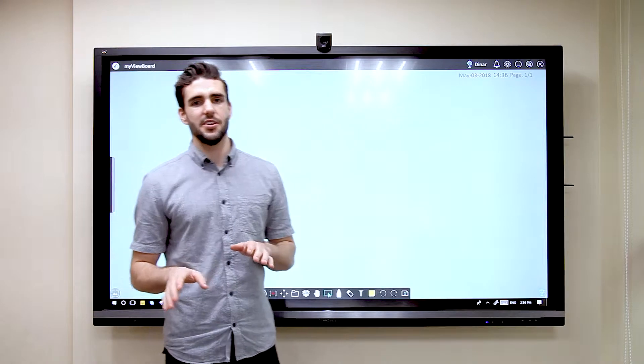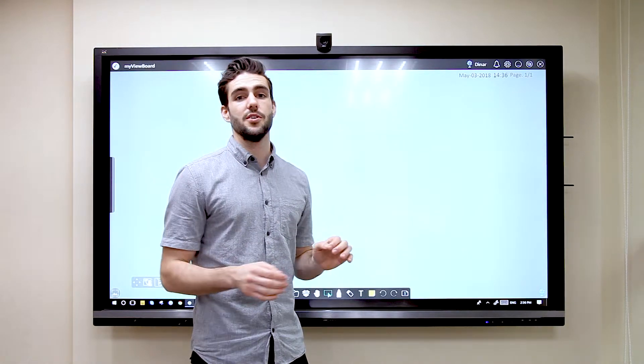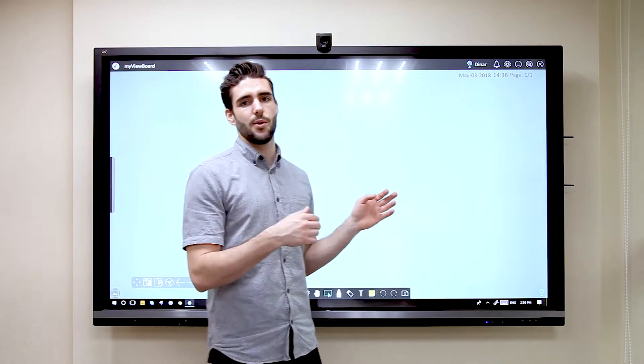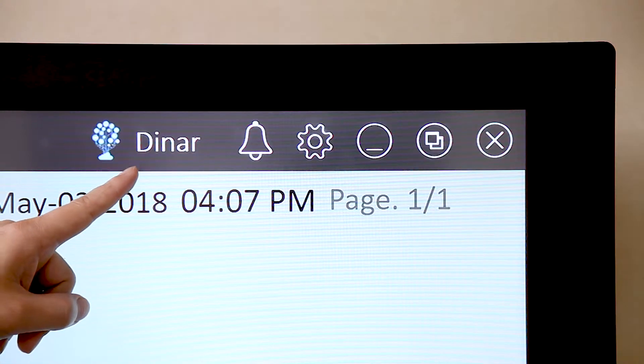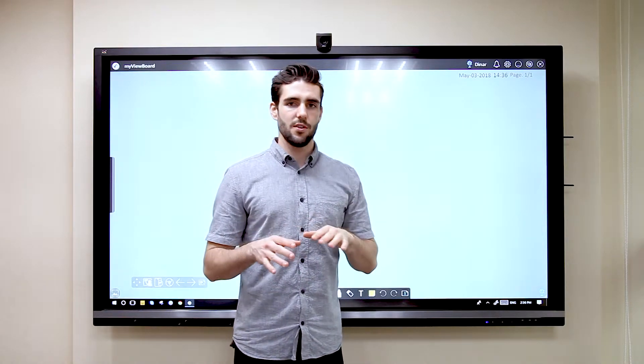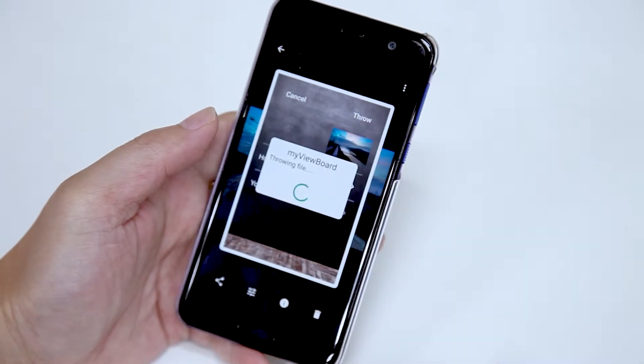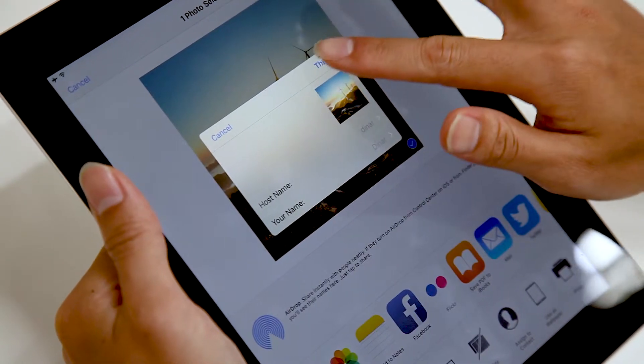Now the first thing you're going to need to do is log into MyViewBoard and let your users know your name because they're going to need that to throw the images onto the screen. The second thing is you're going to want to make sure your users have downloaded the MyViewBoard app. After they've done that they can throw things onto the screen.